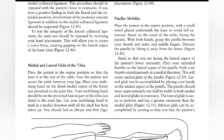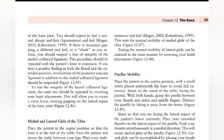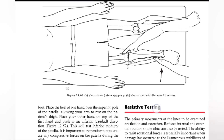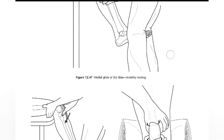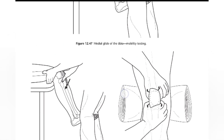For lateral glides of the tibia, place the patient in the supine position so that the knee is at the end of the table. Face the patient and secure the ankle between your legs. Place the stabilizing hand on the distal femur just proximal to the joint line; the mobilizing hand should be on the proximal lateral part of the tibia just distal to the joint line. Use the mobilizing hand to push in a medial direction until slack has been taken up; you will feel an abrupt ligamentous end feel. This tests normal mobility of the medial glides, and for lateral glides we reverse the hand placement.